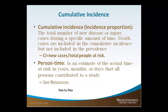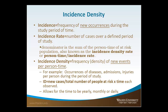Now let's take a look at cumulative incidence, incidence density, and prevalence. With cumulative incidence, it's the total number of new cases within a specific period of time, and we do include death cases in cumulative incidence but not in prevalence. For cumulative incidence, we have the number of new cases divided by the total number at risk. With person time, it's an estimate of the actual time at risk, measured in years, months, or even days. Incidence is the frequency of new occurrences during the study period, and the incidence density is the number of new events per person time.